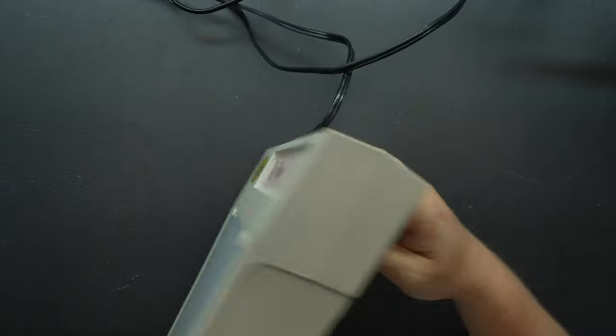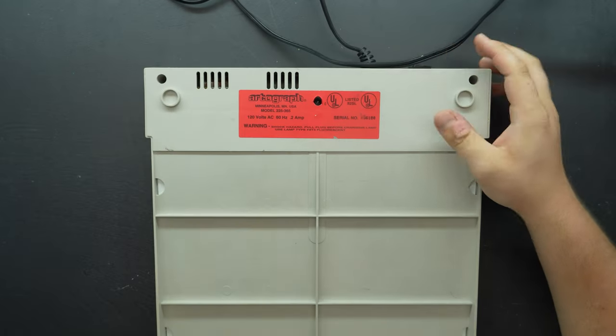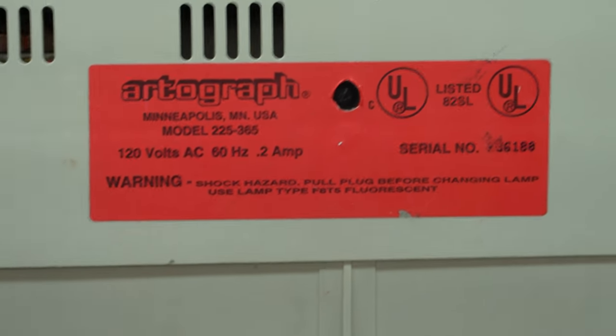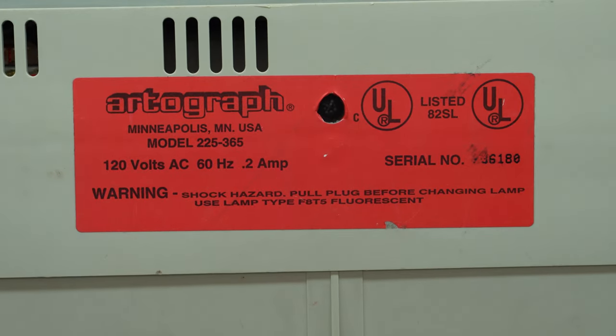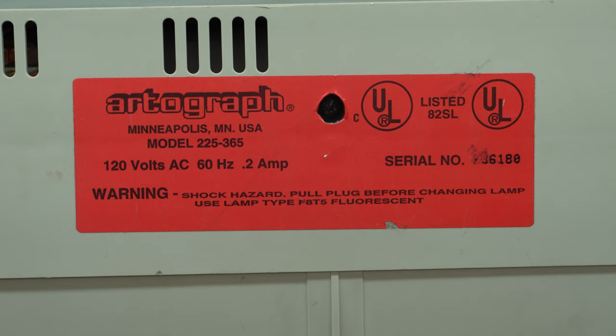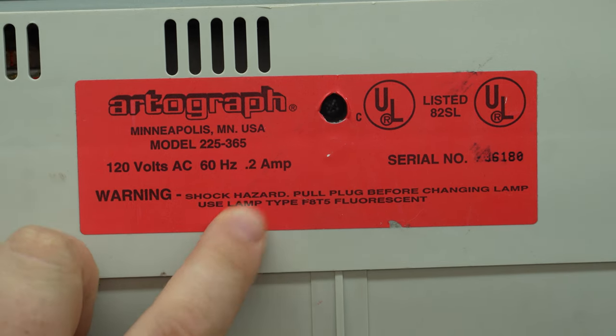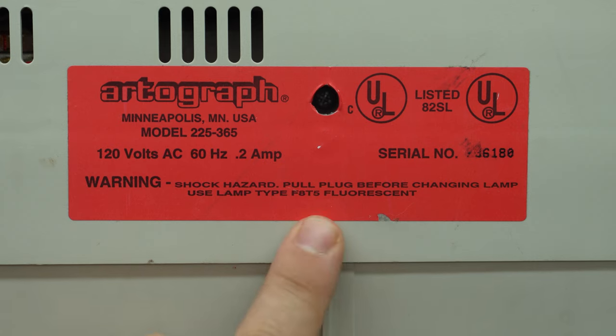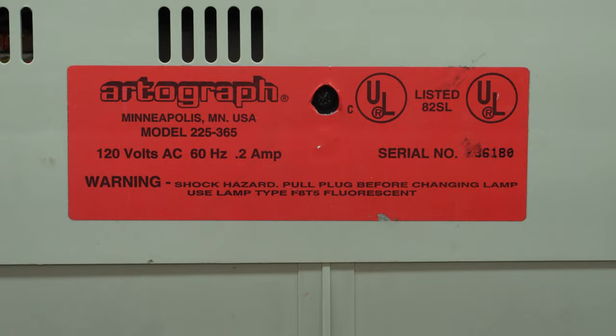If we flip it over here, we can look at some of the specs. Artograph, Minneapolis, 120 volts, 60 hertz, 0.2 amps. It uses an F8T5, an 8-watt bulb. Never heard of the name before, Artograph. Never heard of that before.